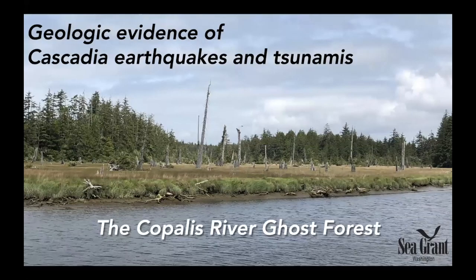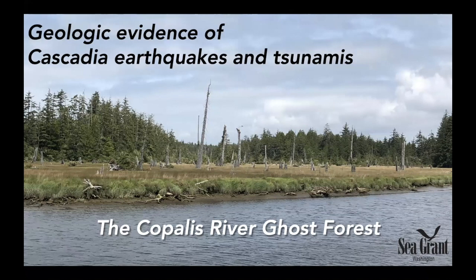This cycle of the coastline dropping down is preserved at many different sites in southwest Washington. This is a picture of one of the most famous sites, called the Copalis River Ghost Forest. What you're seeing here are the remains of a forest of red cedar and Douglas fir that used to be higher up, then dropped down suddenly during the 1700 earthquake. These trees all died because they get tidewater over them regularly — when the tides are at their highest, they're completely covering this marsh.